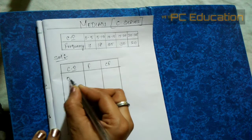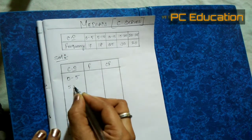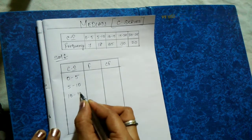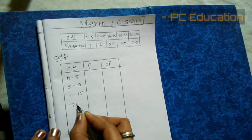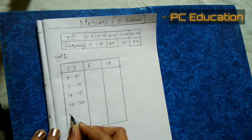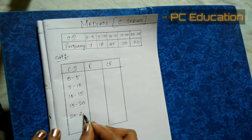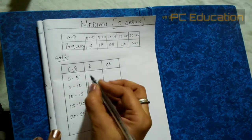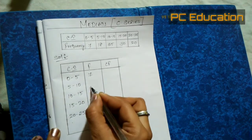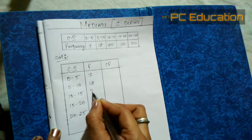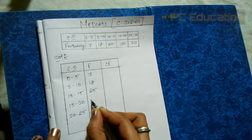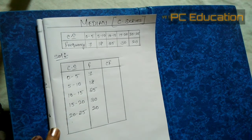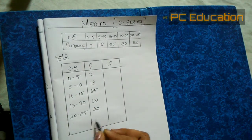The class interval is written as given: 0 to 5, 5 to 10, 10 to 15, up to 22 to 25. Whatever class interval they gave, we copy it as is. The frequency is also taken as given: 7, 18, 25, 30, 20.